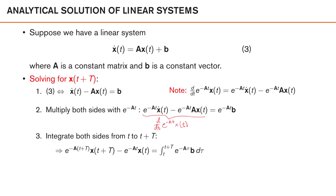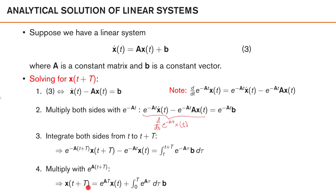We are interested in finding x of t plus T. We do this by moving a term to the other side and multiplying both sides by e to the power of A times t plus T. We get x of t plus T on the left-hand side. On the other side, we get e to the power of A times T times x of t, because terms cancel, plus an integral multiplied by e to the power of A times t plus T, which changes the limits of integration to yield the final expression. It turns out we can solve this integral analytically.